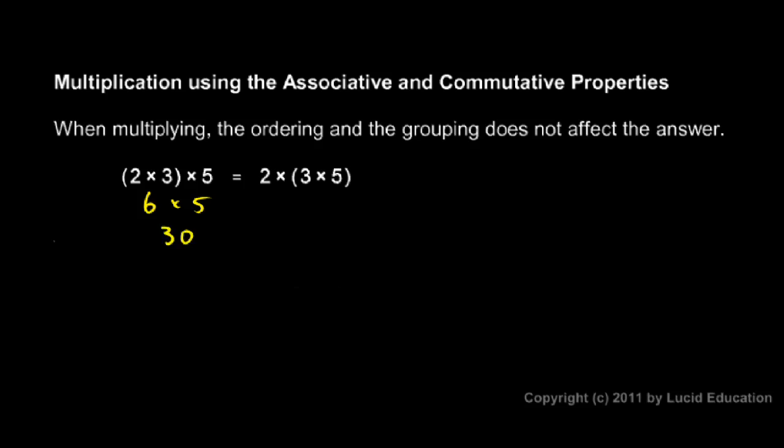And over here on the right-hand side, the 3 times the 5 is in parentheses. If I do the 3 times 5 first, I get 15, and then doing 2 times 15 still gives me 30. Whether I have the 2 and the 3 grouped or the 3 and the 5 grouped doesn't make a difference. The association doesn't matter and the ordering doesn't matter. I can rearrange the numbers to multiply and still get the same answer.